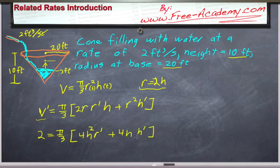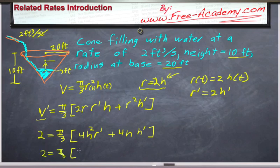So that's a pretty good start, but now we have h, we have h', and we have r'. What do we do now? Well, we have this as a second equation. We have r(t) = 2 times h(t). So we can implicit differentiate this too, to give us r' = 2h', and now substitute that into our equation. So this will give us 2 = π/3 times [8h² h' + 4h h'].